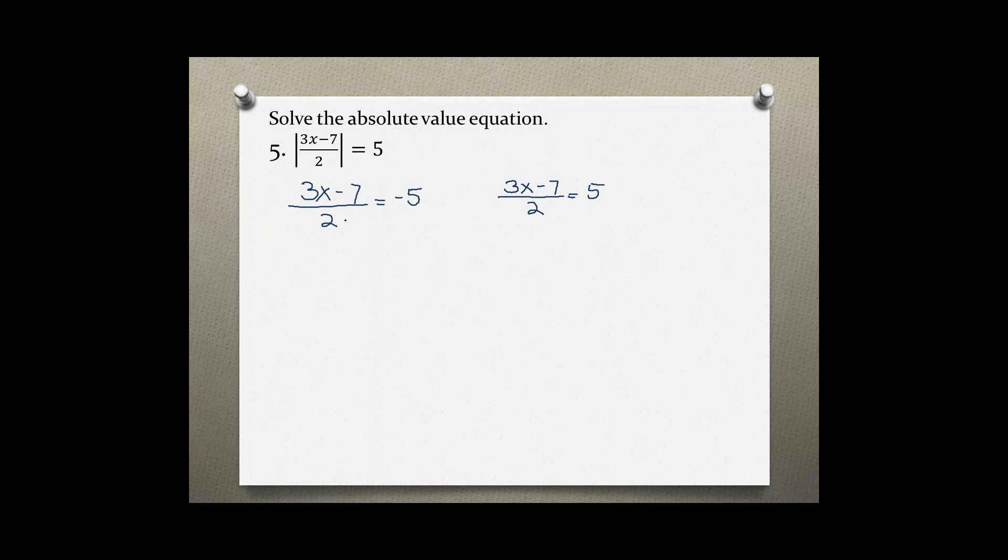Let's solve the left side first. So let's multiply both sides by 2. We are left with 3x minus 7 equals negative 10, adding 7 to both sides.